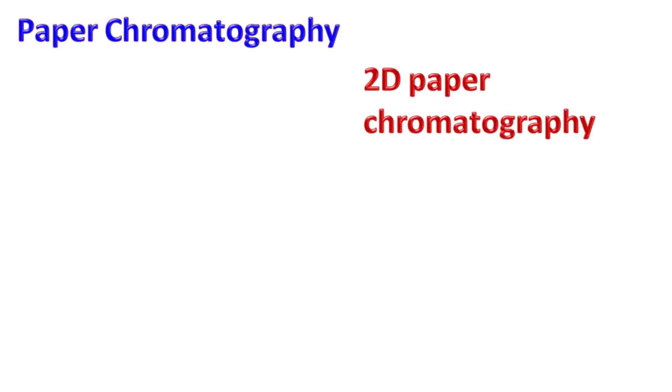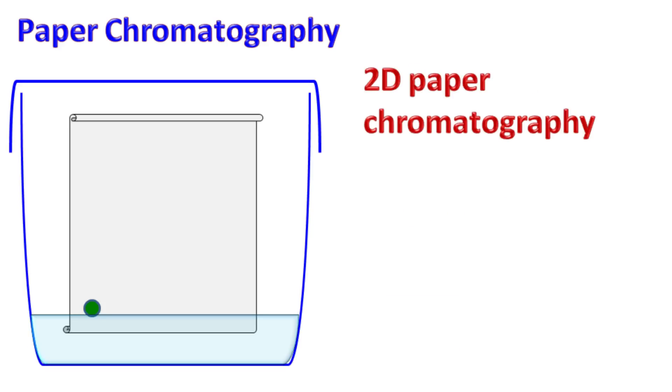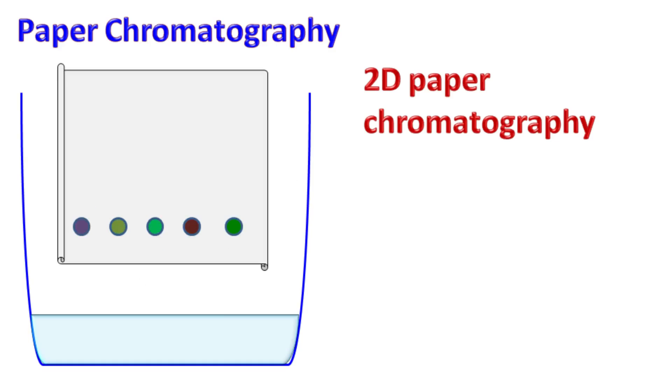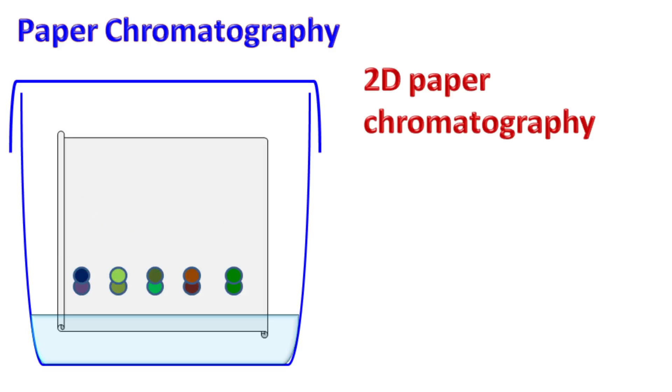In two-dimensional paper chromatography, the chromatography is first carried out in one dimension. Once the chromatography is over, the paper is rotated by 90 degrees and the chromatography is carried out again. Two-dimensional paper chromatography is widely used for the separation of amino acids.